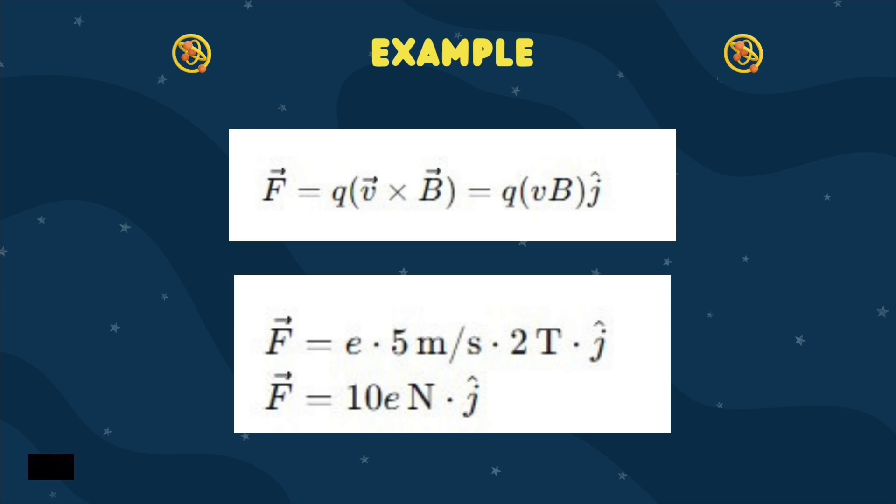Let's say the magnitude of the velocity of the particle is V equals 5 meters per second, and the magnitude of the magnetic field is B equals 2T. Now, plugging these values into the equation.